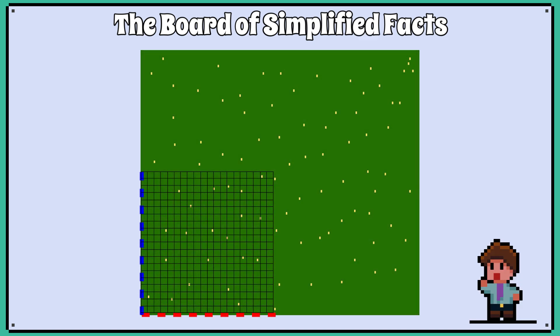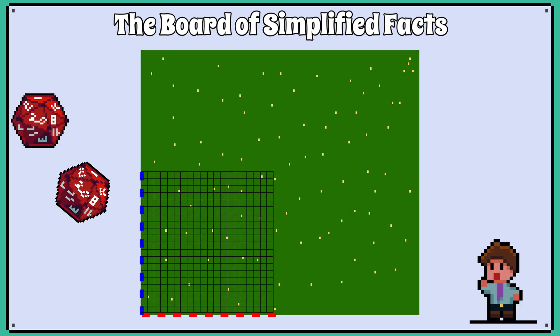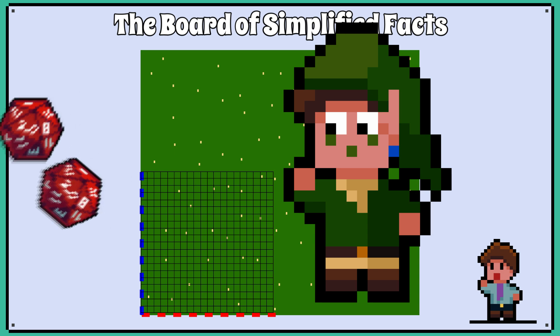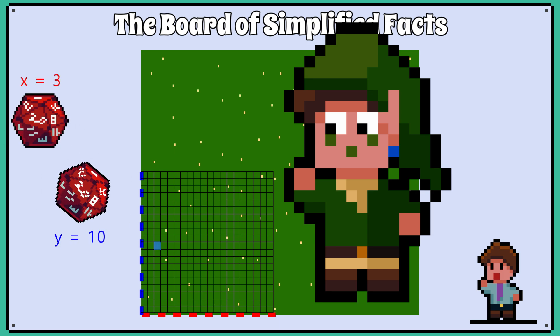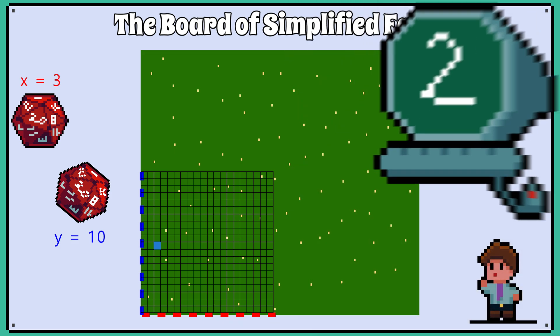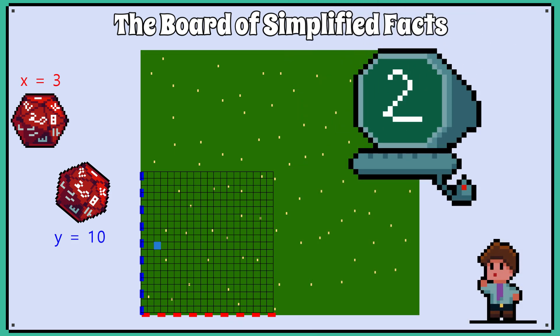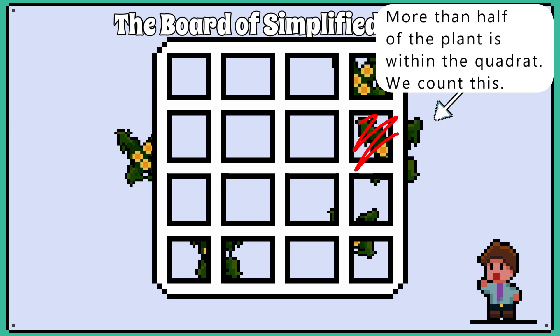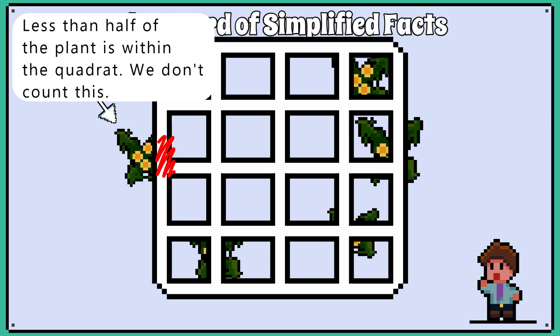To achieve random sampling, we use two 20-sided dice and do our best D&D impression and roll for our coordinates — one dice is the x-coordinate and one dice is the y-coordinate. Using a random number generator is perfectly fine as well. Once we get our coordinates, we place the quadrat there. If half or more of the organism is visibly within the quadrat, including the frame itself, then we count it. If less than half of the organism is within the quadrat, we do not count it.